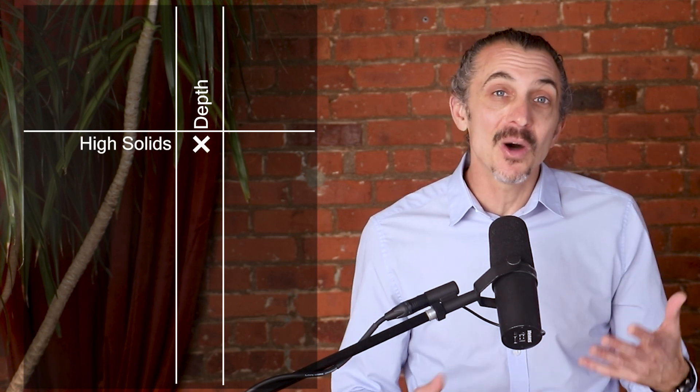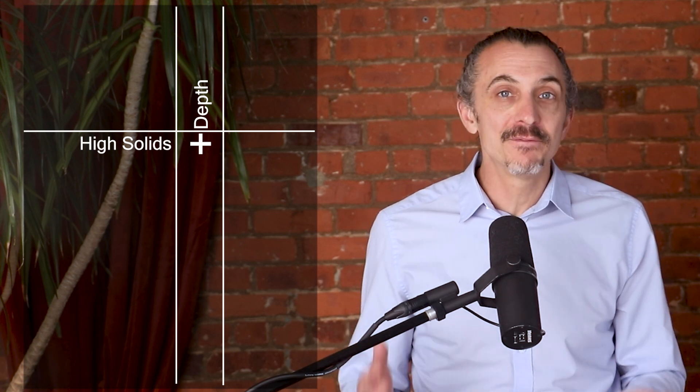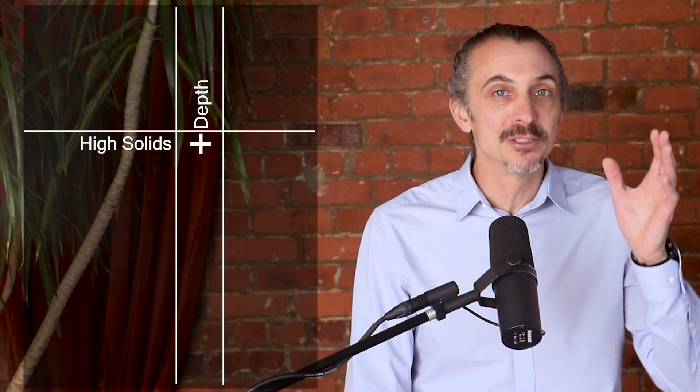Depth filters, such as downflow deepbed and dual media filters, have been trusted, robust workhorses that can handle high fluctuations in solids. You can think of them like an absorbent sponge. The depth of the filter bed offers a place to absorb process changes and upsets.